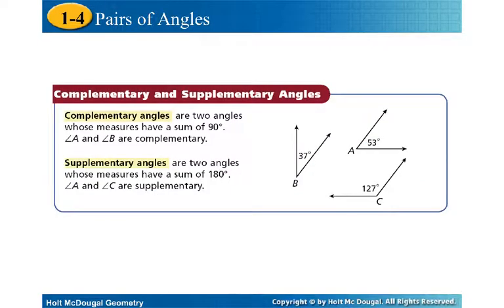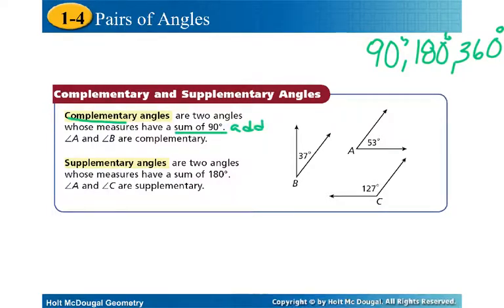The next piece is complementary and supplementary angles. When it comes to angles, hopefully you've realized that the numbers 90, 180, and 360 are all important degree measures. If we look at complementary angles, they have a sum of 90, which means they would add to 90. And then supplementary angles add to 180.